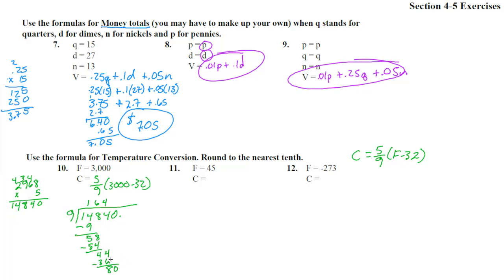Subtract and we get an 8. Drop down the 0. 9 goes into 80 eight times. 8 times 9 is 72. Subtract and we get an 8. Drop down another 0. That 8 is going to repeat. So if we round, we get 1648.9 degrees Celsius. That was a long one with that long division. We got it.